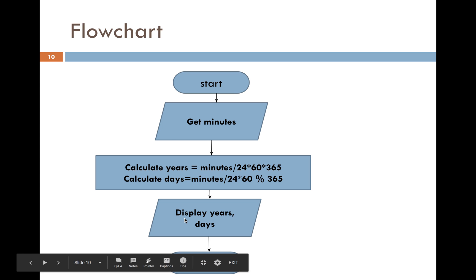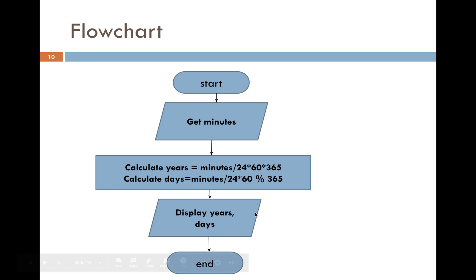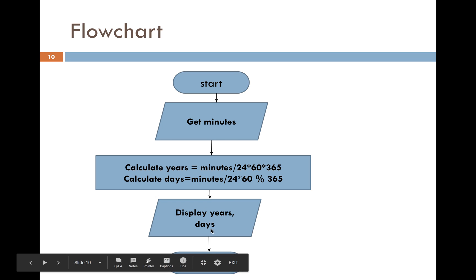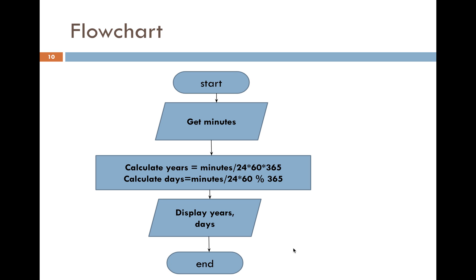For displaying years and days, you again use symbol two for input/output — both input and output use the same symbol. At the end you have the terminal symbol. This is a simple example of a flowchart: a graphical representation using standard symbols that anyone familiar with the standard can read.